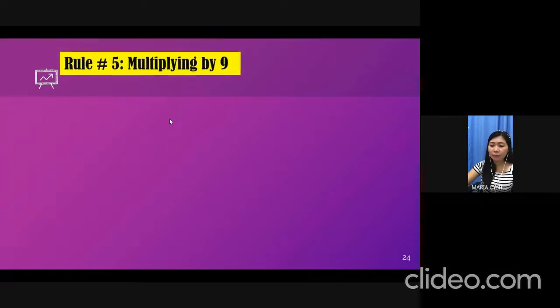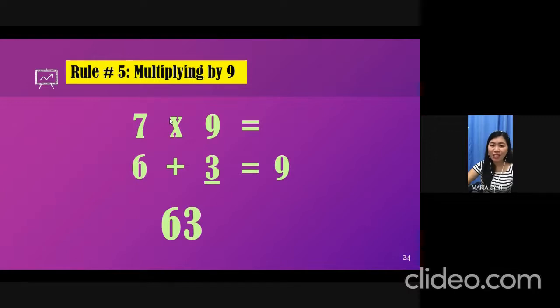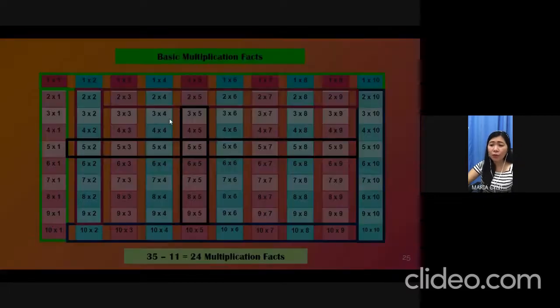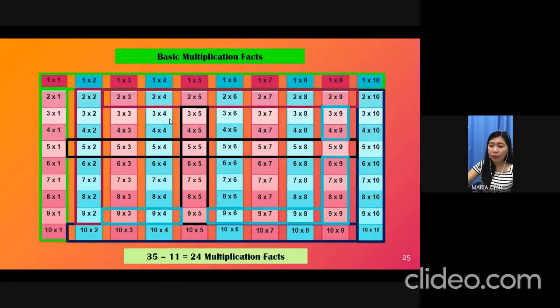Next example, 7 times 9. 7 minus 1 is equal to 6. And then you ask yourself, what number am I going to add to 6 to equal it to 9? And the answer is 3. Therefore, 7 times 9 is equal to 63. So now you know the answer to 3 times 9, 4 times 9, 6 times 9, 7 times 9, and so on. And so you also know the reverse: 9 times 3, 9 times 4, 9 times 6, 9 times 7, 9 times 8, and so on.